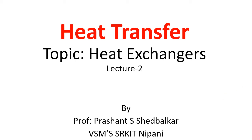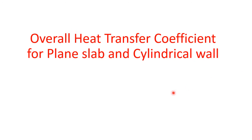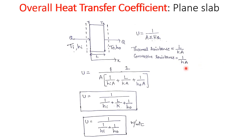Welcome students to video lecture 2 of heat exchangers. Today's class we are going to study the overall heat transfer coefficient for both the plane slab and the cylindrical wall. Let us first study the overall heat transfer coefficient for the plane slab, where the overall heat transfer coefficient is given by 1 divided by A into sigma of thermal resistance, where U indicates the overall heat transfer coefficient, already studied in the first module.